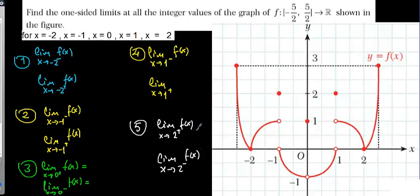Now we are going to find these values. If I get closer to minus 2 from the negative side, I put my pen on the graph and get closer to the value 2 on the x-axis. When I get closer to minus 2 from the negative side, I recognize that the y-value is getting closer to 0. So the limit at minus 2 from the negative side equals 0. Now getting closer to minus 2 from the positive side, the y-value is again 0, so that limit is also equal to 0.